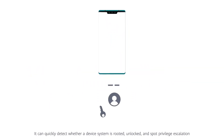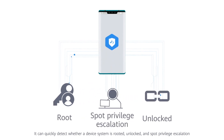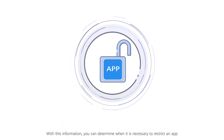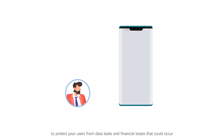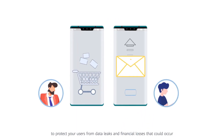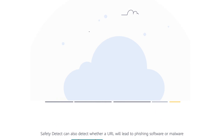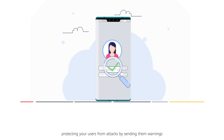It can quickly detect whether a device system is rooted, unlocked, and spot privilege escalation. With this information, you can determine when it is necessary to restrict an app to protect your users from data leaks and financial losses that could occur if they send emails or make online payments over unsecured channels. Safety Detect can also detect whether a URL will lead to phishing software or malware, protecting your users from attacks by sending them warnings.